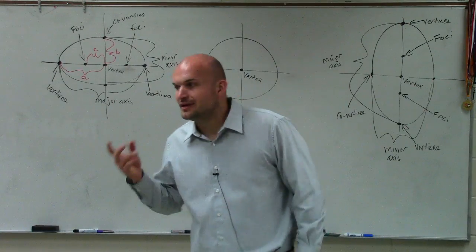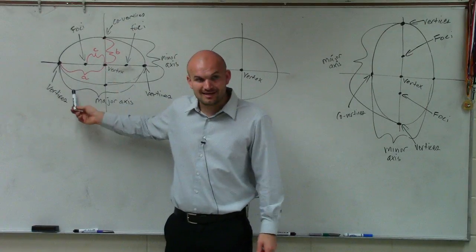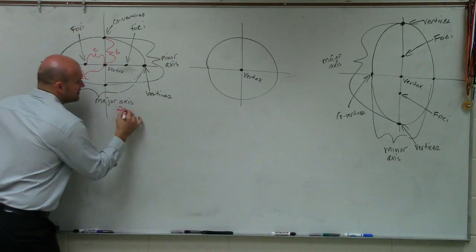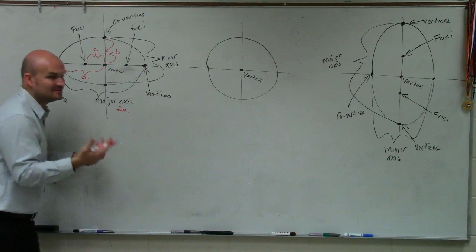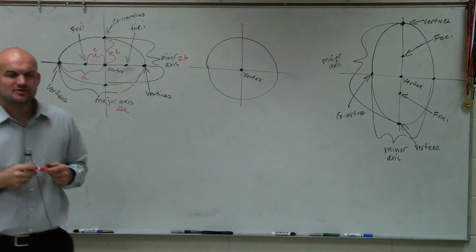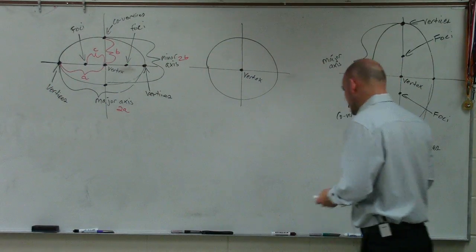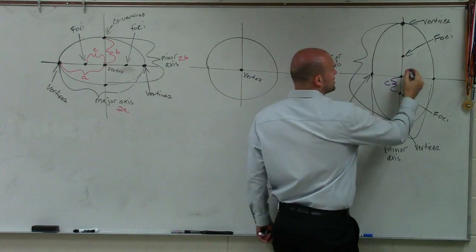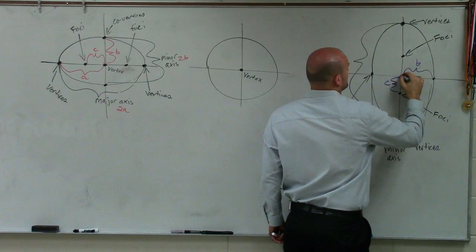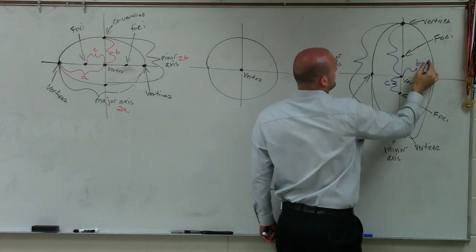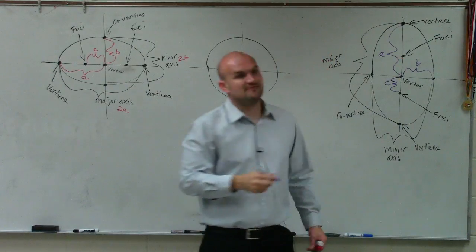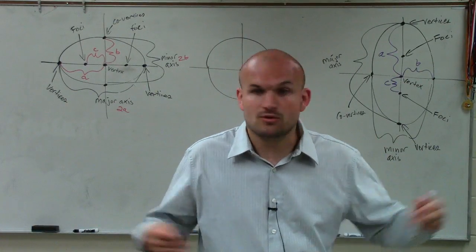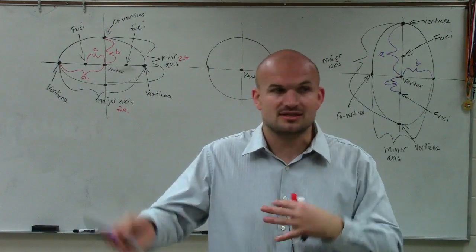If the distance from the center to a vertex is A, then the major axis has a length of 2A. And the minor axis has a length of 2B. It doesn't matter if it's vertical or horizontal — the information is all the same. The only difference is that the major axis is vertical if elongated vertically, and horizontal if elongated the other way. The major and minor axis labels just go together with that.